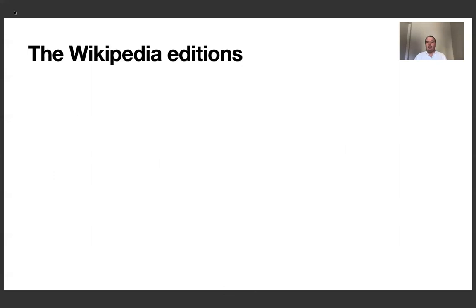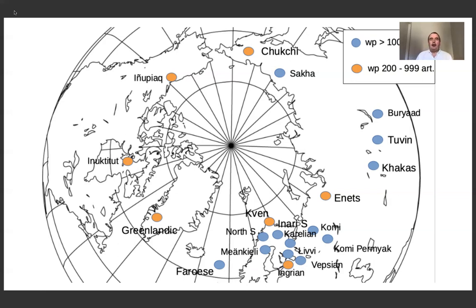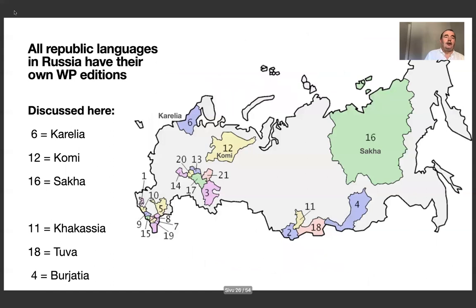So let's now look at the Wikipedia editions. There are some 45 of them, and approximately half have more than 200 articles. We're not talking about millions of articles here — we're talking about 200 articles and onwards. The blue dots here are Wikipedias with more than 1,000 articles. As you can see, none of these big ones are in America. In Russia, there are Republic languages, and in the Nordic countries there are most Wikipedias of that size. But then there are some Wikipedias where something has happened, and most of the others — mostly in Russia and in North America — have less and are not shown on the map. The largest minorities in Russia have their own Republic, and their languages include Karelia with Karelian, Livi and Veps; Komi with Komi; Sakha or Yakutia; and Khakassia, Tuva, Buryatia — further south, but no agriculture, so we count them in as circumpolar as well.